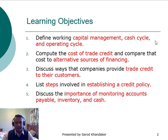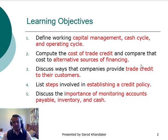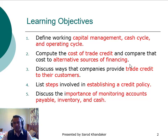Before going to the topic, let's look at the learning objectives. The learning objectives include: number one, define working capital management, cash cycle and operating cycles. Two, compute the cost of trade credit and compare the cost to alternative sources of financing. Third, discuss ways that companies provide trade credit to their customers. And the last step involves establishing a credit policy and discussing the importance of monitoring accounts payable, inventory management and cash.